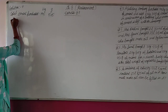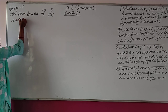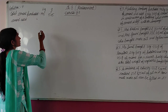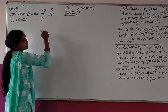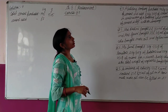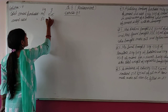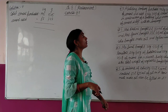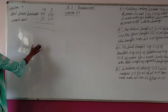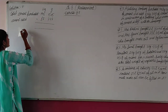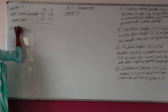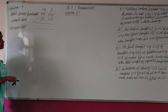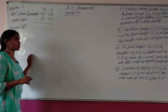Cement used to construct a building: 87 kilogram 347 gram. We need to find how much cement is left. We have to find this using the subtraction sign.